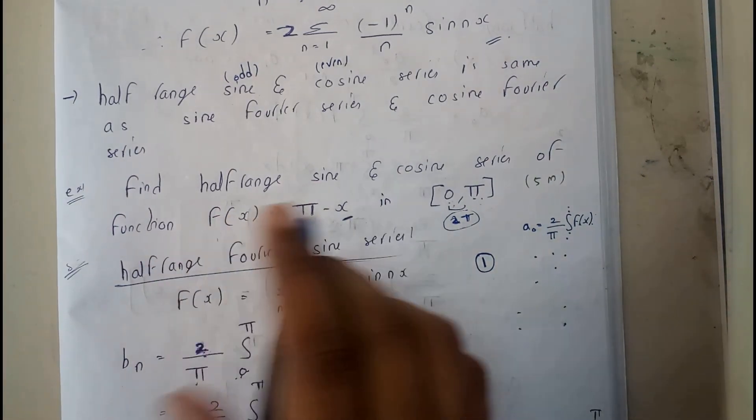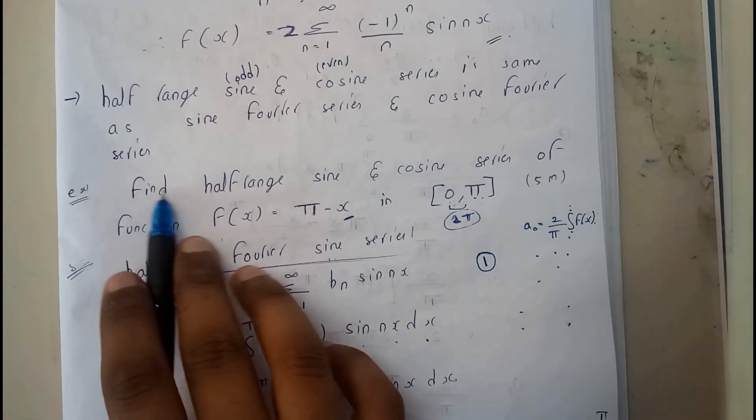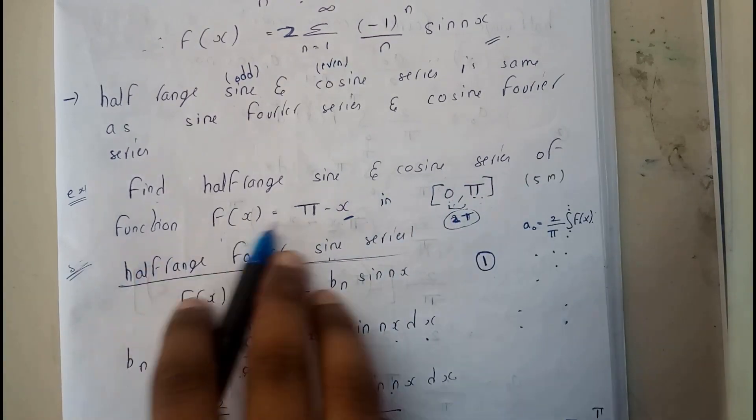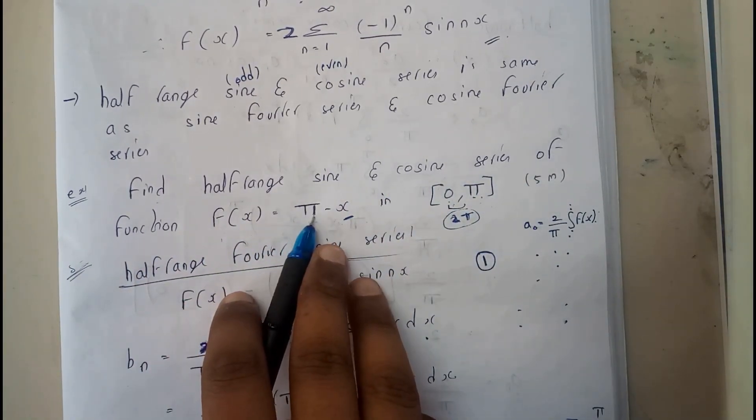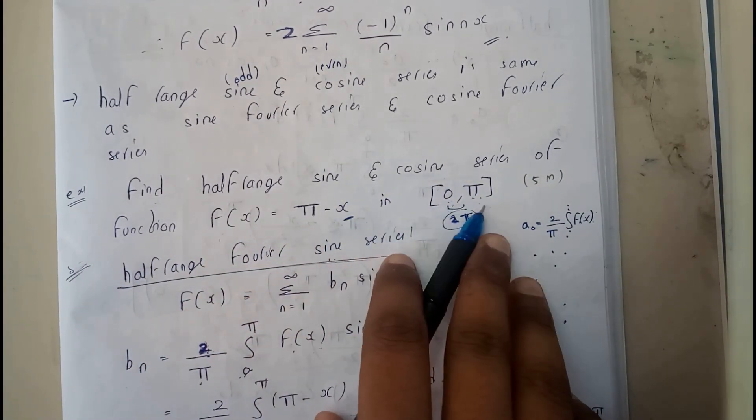So let us assume this question as an example. Find half range sine and cosine series of the function f(x) = π - x in the interval (0, π).